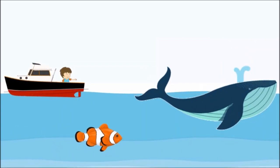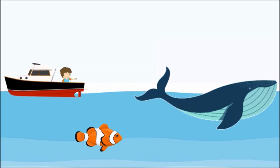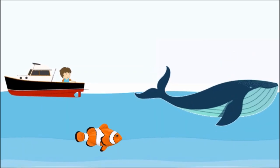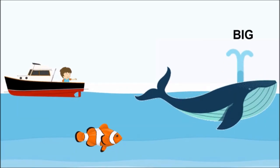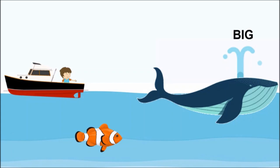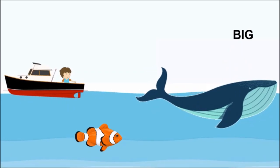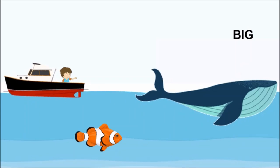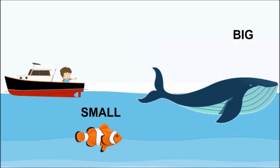Children tell me what is big here? Yes. Whale is big. And what is small here? Very good. The orange and white fish, which is also called clown fish, is small.